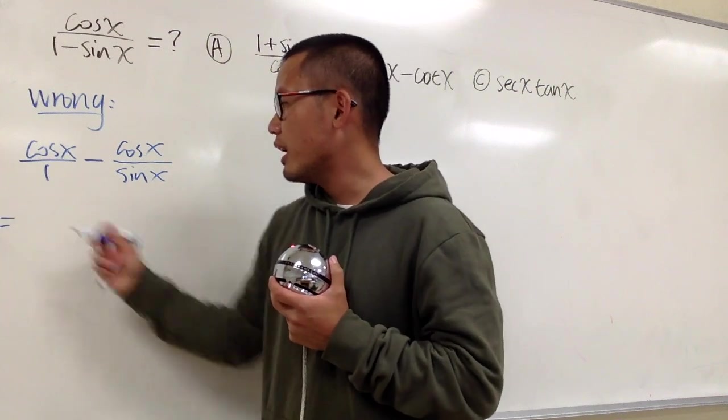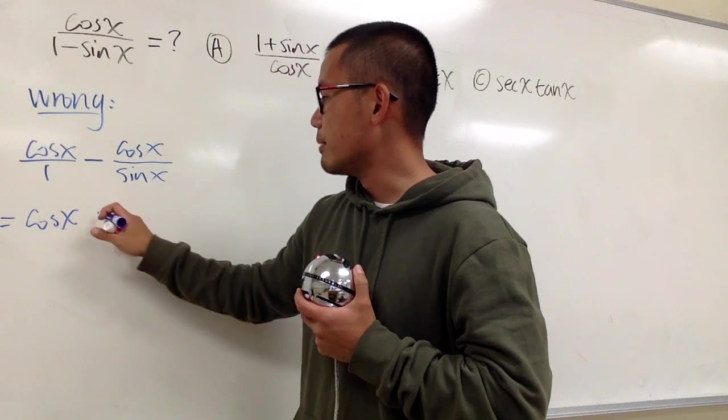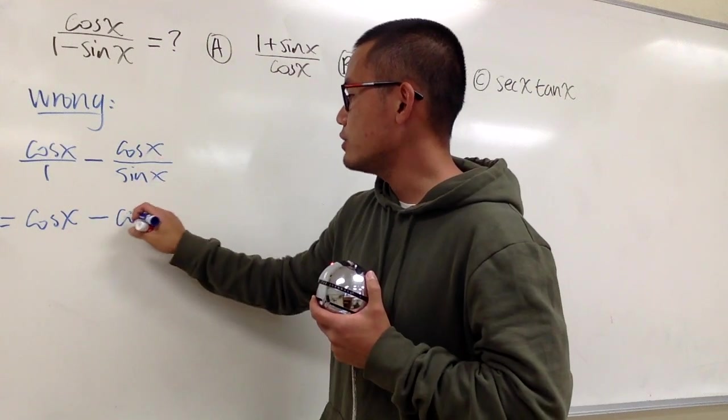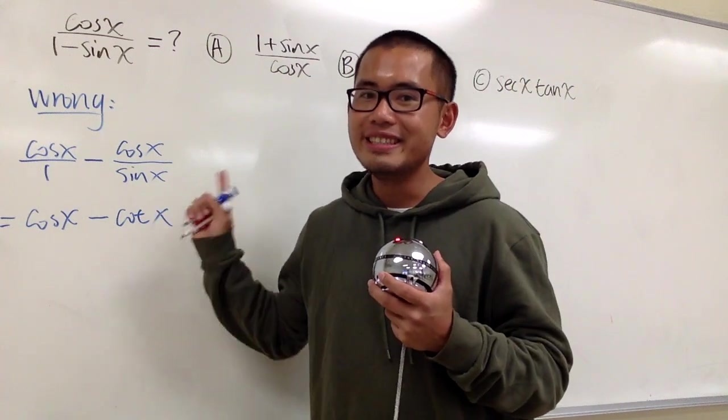And if you do it this way, you end up with cosine x over 1, which is just cosine x, and then minus, and cosine over sine, we know that's cotangent with x as the input. Well, this is incorrect.